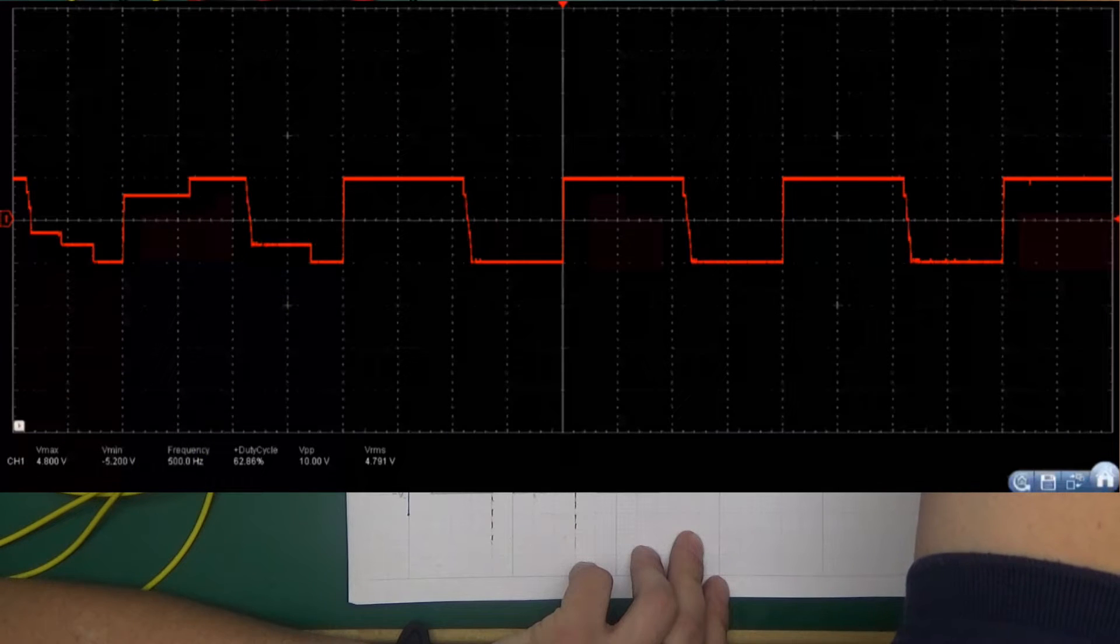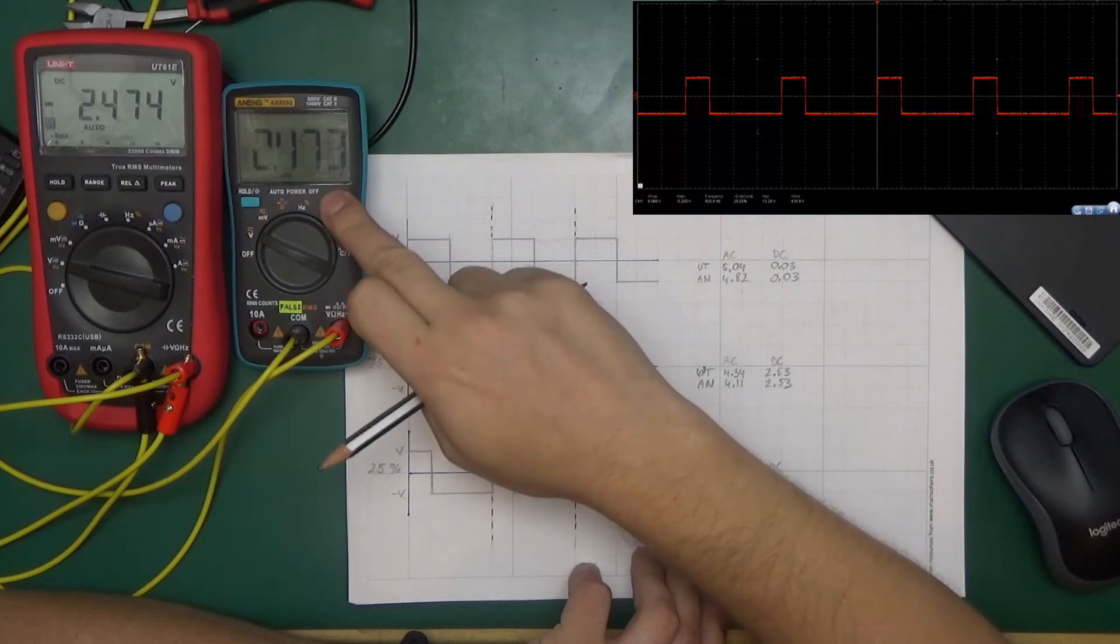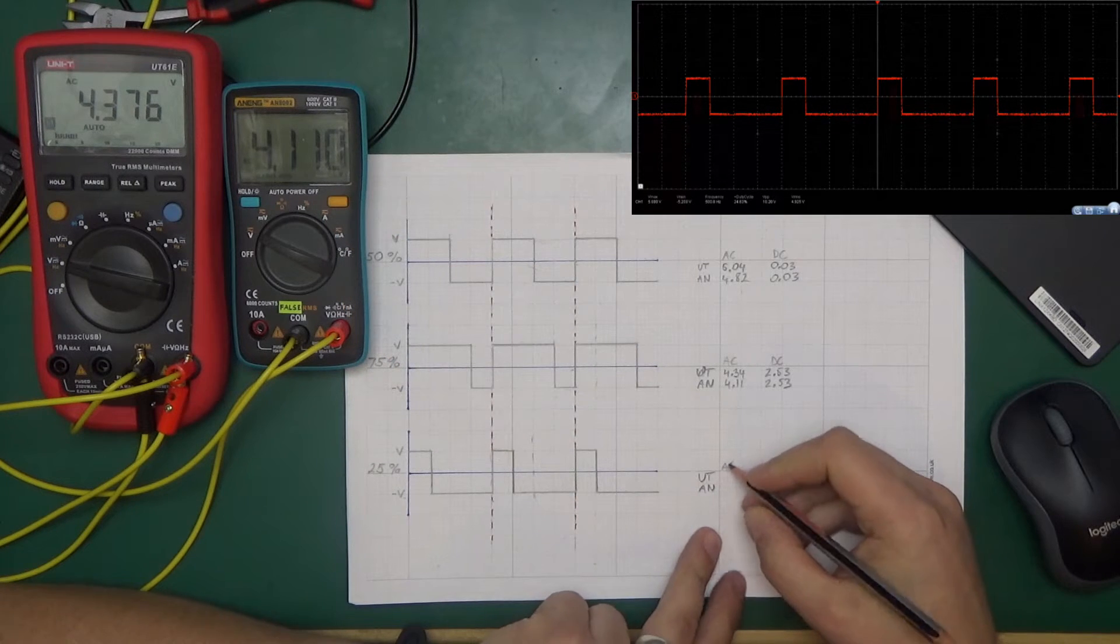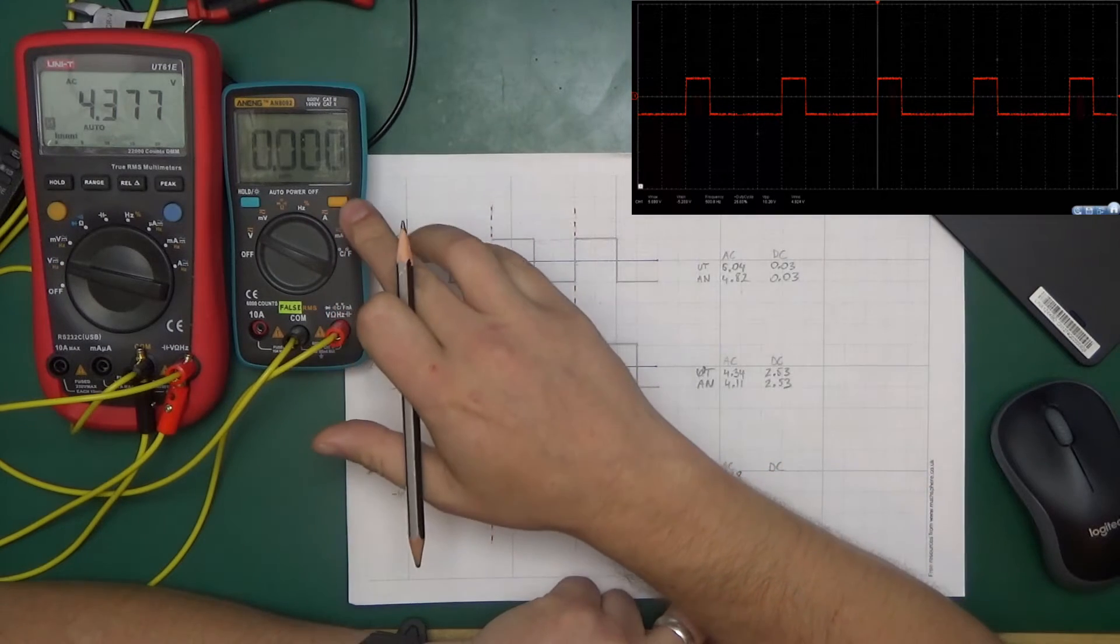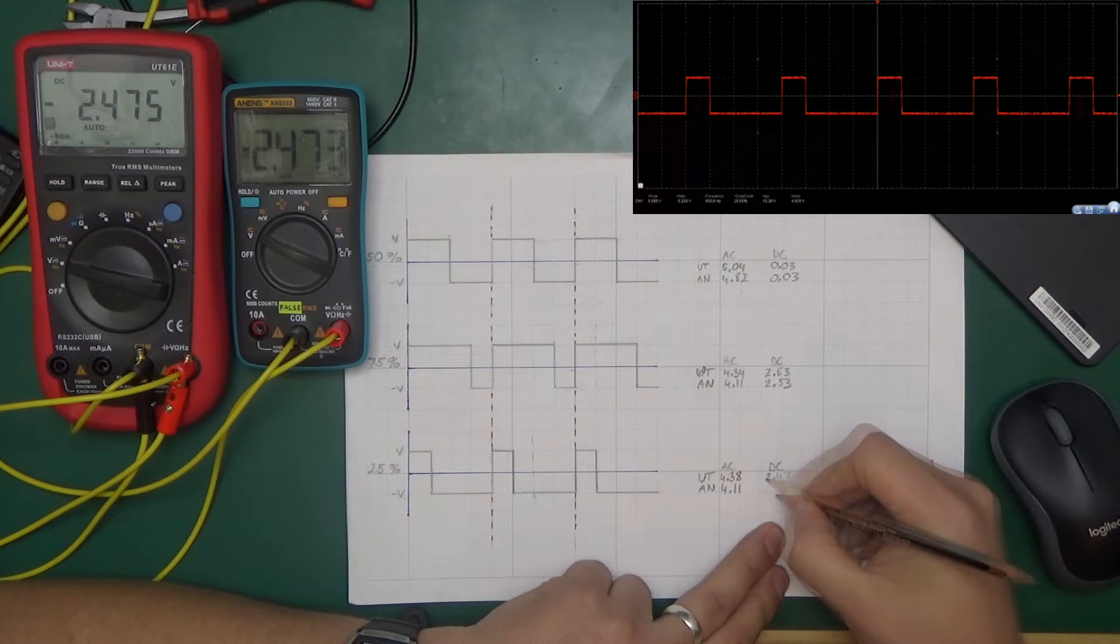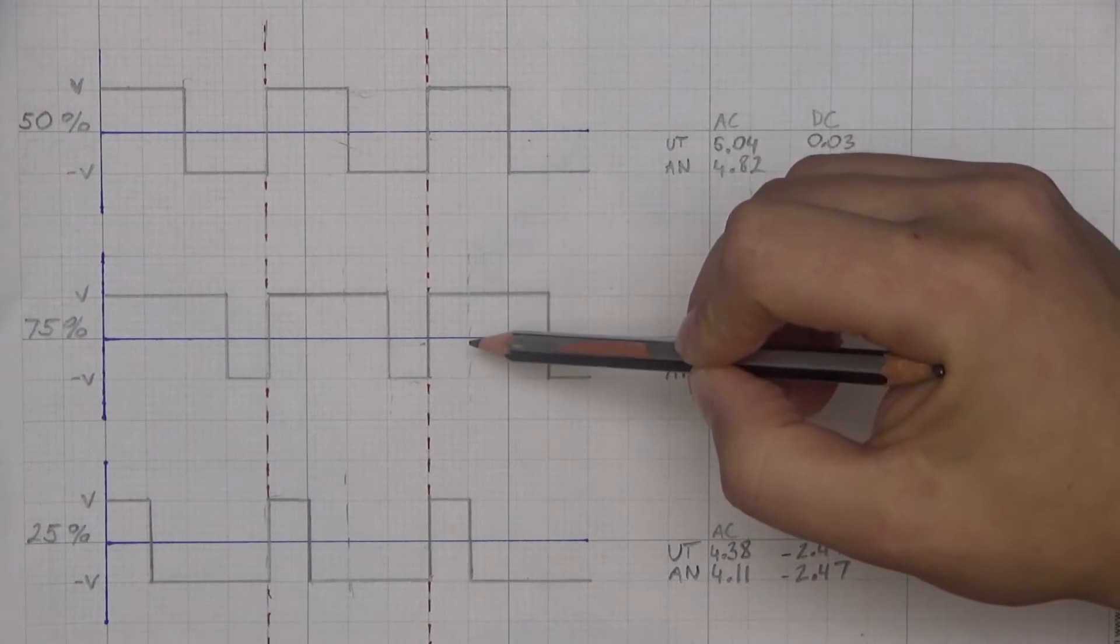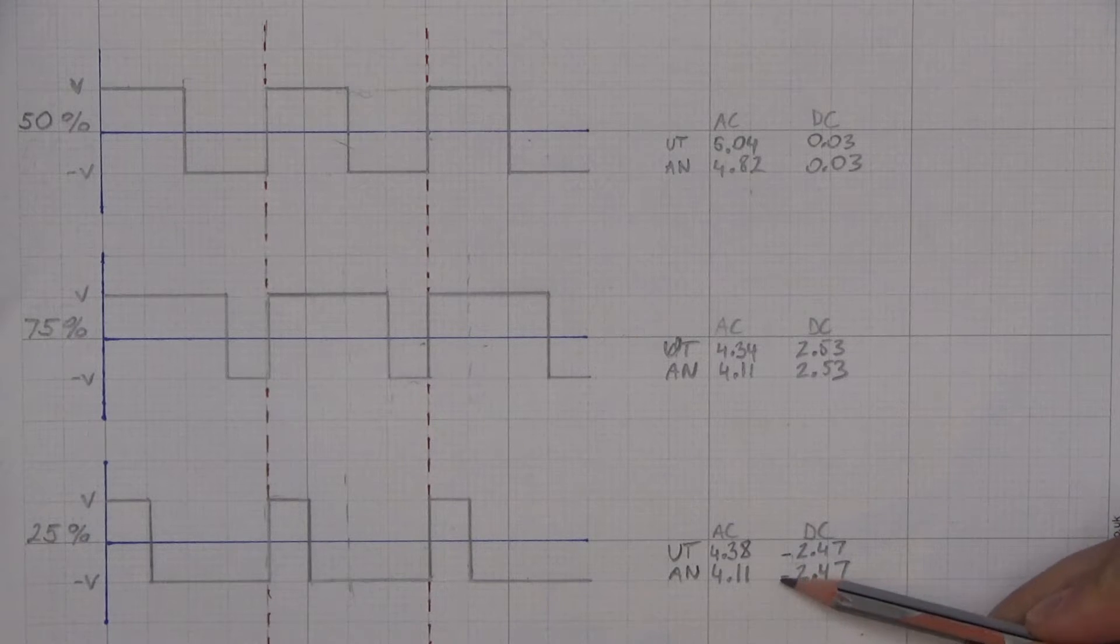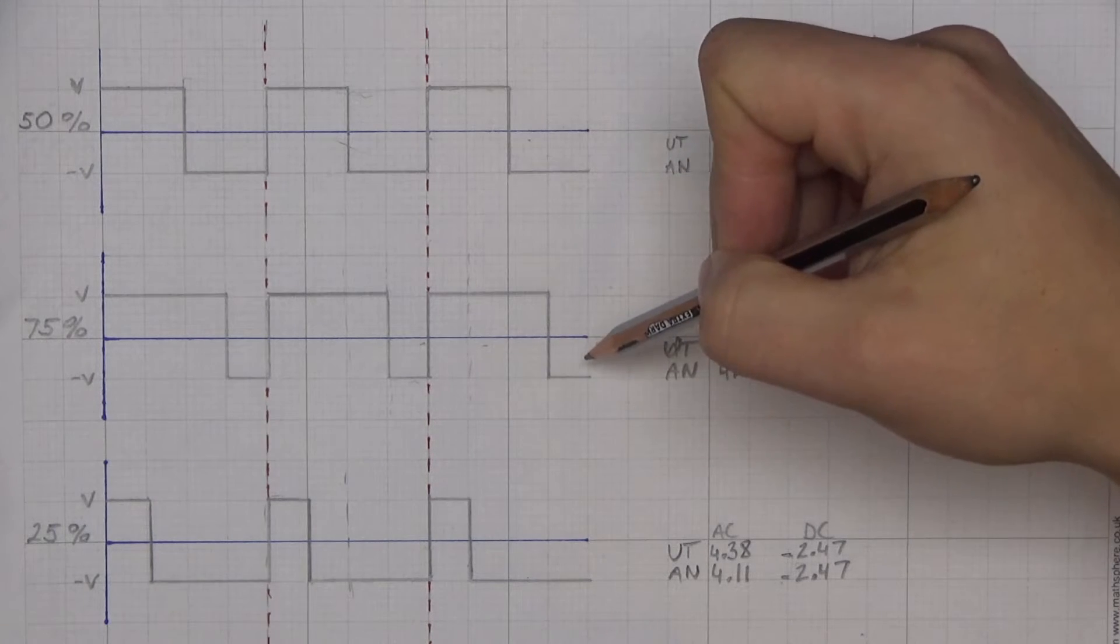There you go, 25%. So Unity is showing 4.38 and Anang 4.11. And then if we flip it over to DC, Unity is showing 2.47 and 2.47 on Anang as well. So here is what we have: 50%, 75%, and 25%. Those values were negative on the last measurement; I just forgot to put a minus. I've just added it on now.